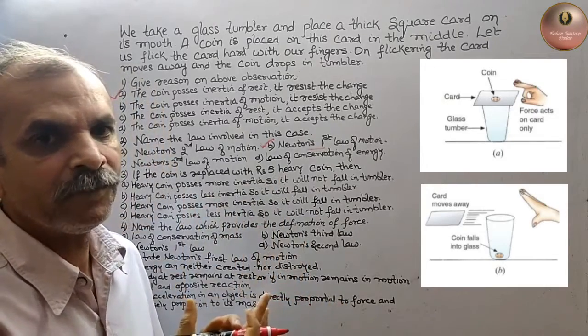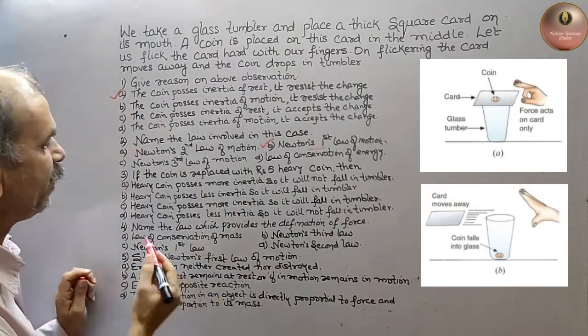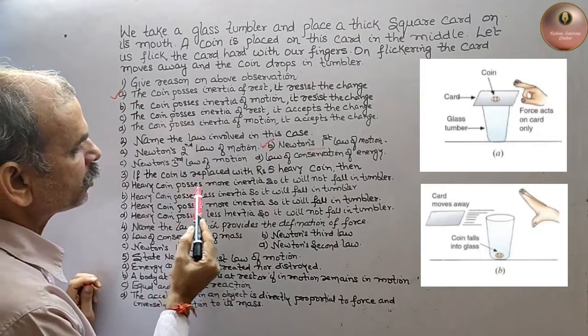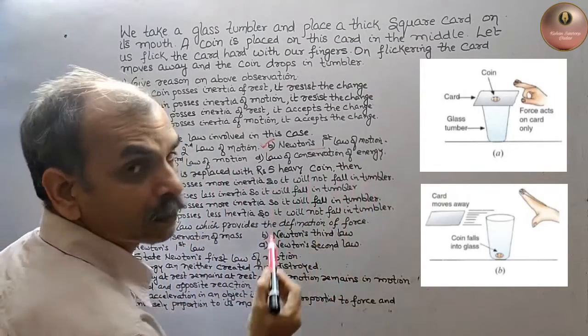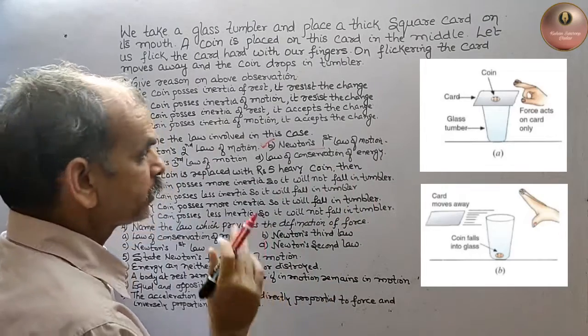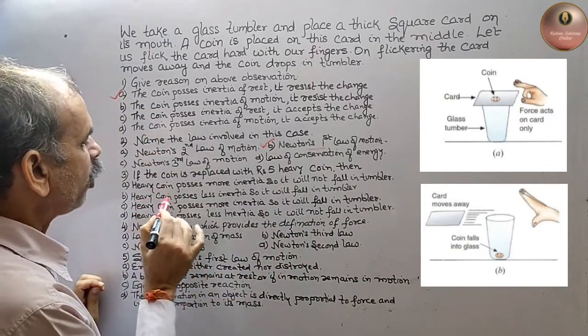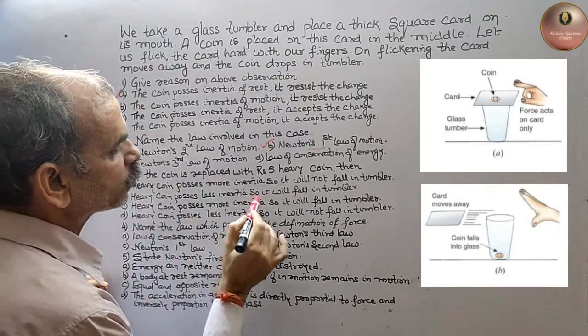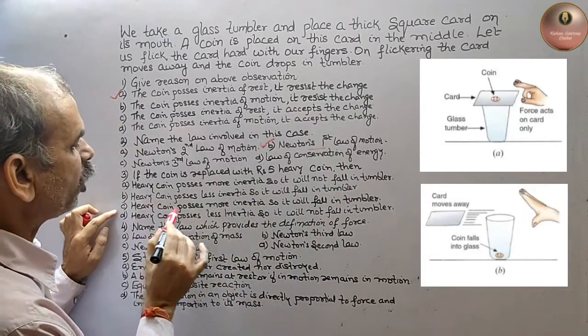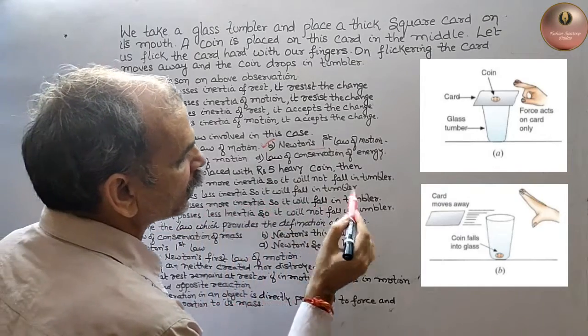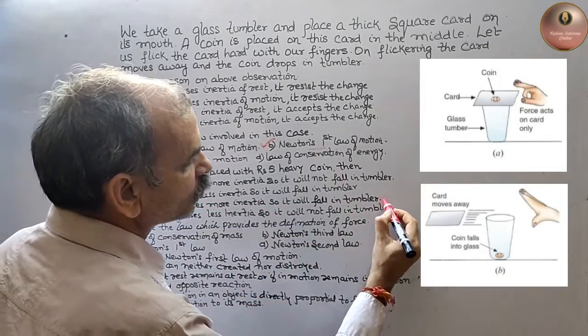Let's look at the options. Heavy coin possesses more inertia so it will not fall in tumbler. Second, heavy coin possesses less inertia so it falls in tumbler. C is heavy coin possesses more inertia so it will fall in tumbler. So yes, it's true.